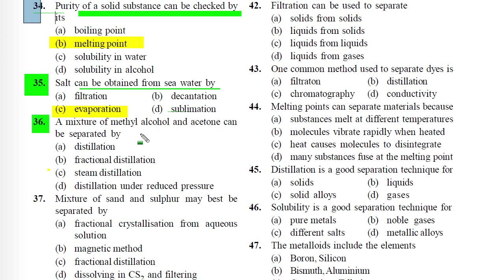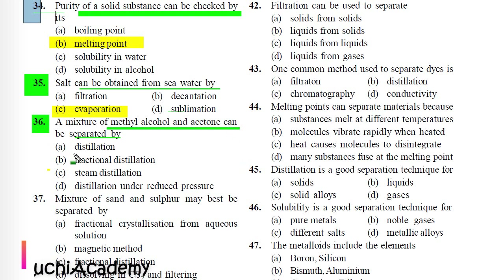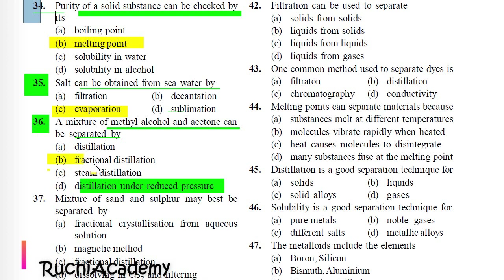Question 36: A mixture of methyl alcohol and acetone can be separated by: A) Distillation, B) Fractional distillation, C) Steam distillation, D) Distillation under reduced pressure. Correct answer is B) Fractional distillation, as there is only a small difference between the boiling points of methyl alcohol and acetone.